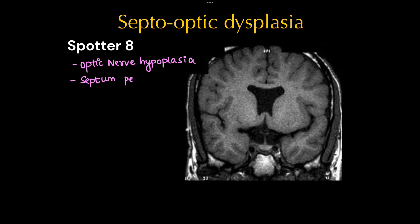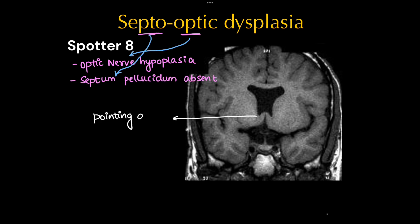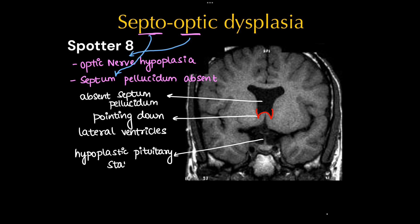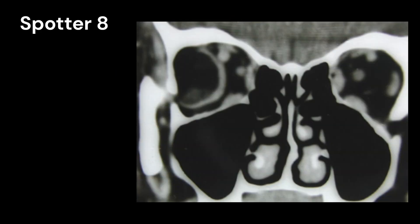This is a case of septo-optic dysplasia. Here we will have optic nerve hypoplasia and the septum pellucidum will be absent. Here we can see pointing-down lateral ventricles, which is classic, along with a hypoplastic pituitary stalk.